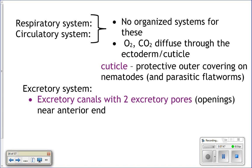A lot of worms, especially parasitic ones, have a cuticle on the outside of their body. That cuticle is like a hard, tough protein outer covering, and it helps those worms survive in pretty harsh environments. Just to give you an idea — some parasitic roundworms can be stuck in straight vinegar and survive because of this cuticle. The cuticle is tough, and they actually have to molt it in order to grow: get rid of the cuticle, grow, and then grow a new one.